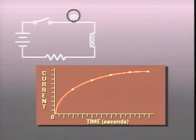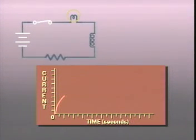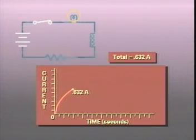It takes five of these time constant periods for the current to reach its maximum value. If we show the transient time of a circuit whose maximum current is 1 ampere, then in the first time constant, the current will rise from 0 to 63.2% of its maximum value, or 0.632 ampere.